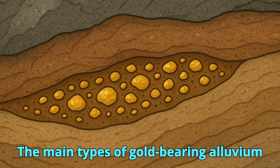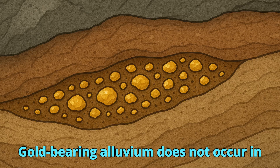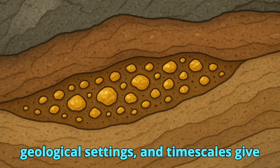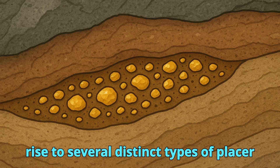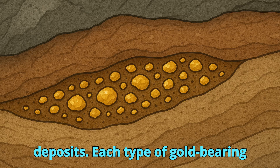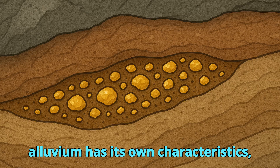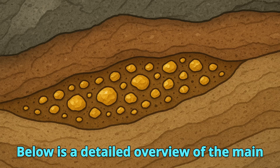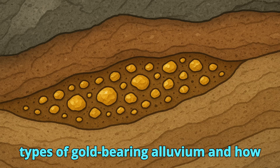The Main Types of Gold-Bearing Alluvium. Gold-bearing alluvium does not occur in just one form — different river processes, geological settings, and timescales give rise to several distinct types of placer deposits. Each type has its own characteristics, origins, and economic potential. Below is a detailed overview of the main types of gold-bearing alluvium and how they form.